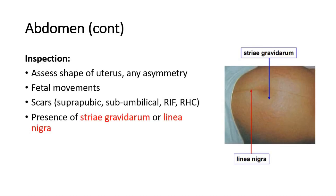On inspection, assess the shape of the uterus and note whether there is any asymmetry. Look for fetal movements and also look for scars. Women often forget to mention previous surgical procedures if they were performed long ago. Common areas to find scars include the suprapubic area — look for scars of caesarean section or laparotomy for ectopic pregnancy or ovarian mass. There may be scars at the sub-umbilical area suggesting laparoscopy, right iliac fossa scar suggesting appendicectomy, and right upper quadrant scar such as from cholecystectomy.